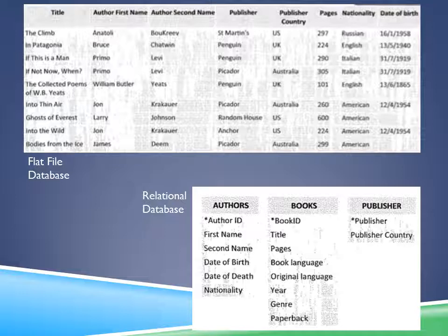Each of these tables will need to have a primary key to link each table to the others. By making a relational database with this data, it'd be much easier to navigate and much clearer to read. One common mistake is putting somebody's age — it's better to put their birth date rather than their age, because their age will change every year and you'd have to update it throughout the database each time.